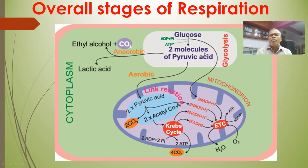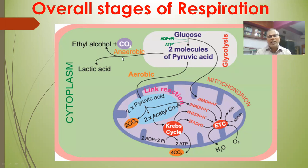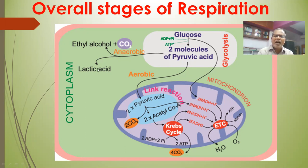Glycolysis is the first step and is common to aerobic and anaerobic organisms. Under anaerobic conditions, this pyruvic acid is converted into either ethyl alcohol or lactic acid. This process is said to be fermentation.